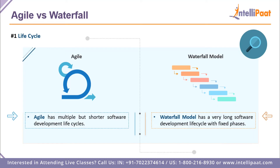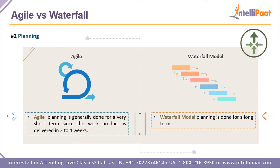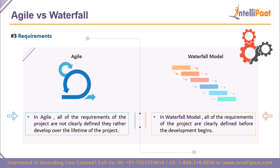On planning: with agile, planning is generally done for a very short-term period, since the life cycle is around two to four weeks, so planning is done very fast. Whereas with waterfall, planning takes a long time because the product will develop over a very long period. On requirements: in agile, all requirements aren't clearly defined at the start — you only get to know your requirements over the development of your product. Whereas in waterfall, you already know all the requirements clearly, with an end goal in mind and all necessary steps defined to achieve it.